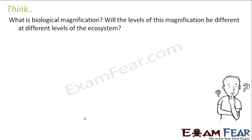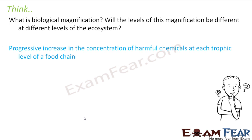Let's look at the next one. What is biological magnification? Will the levels of this magnification be different at different levels of the ecosystem? Now I have already spoken about biological magnification. What is it? It is the progressive increase in the concentration of harmful chemicals at each trophic level of a food chain.